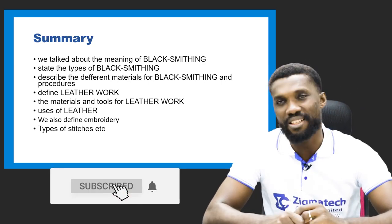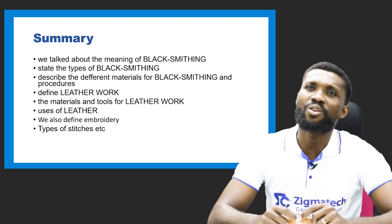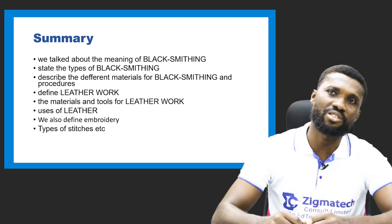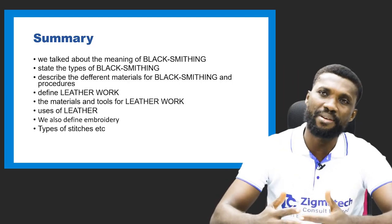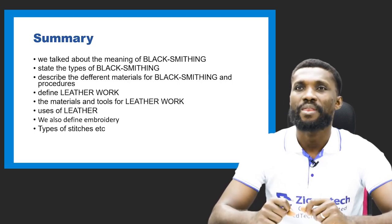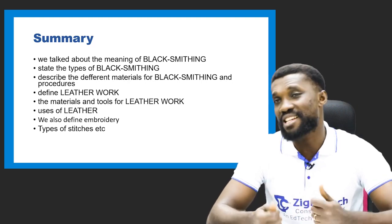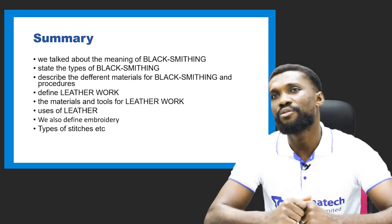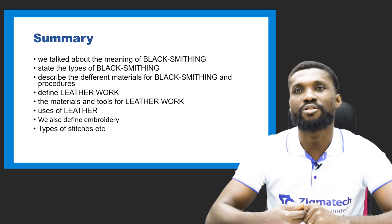Having said all this, let's do a quick rundown of what we've learned. We talked about calabash decoration — the process of making calabash, how to sell it, how to decorate it, and the uses of calabash. We also went in detail to discuss the meaning of blacksmithing, stated the types, described the different materials, and some of the things the blacksmith produces.